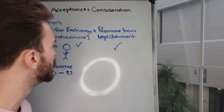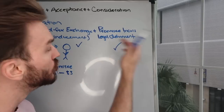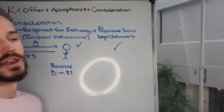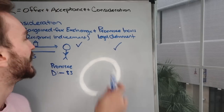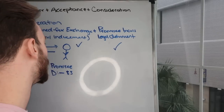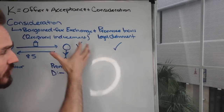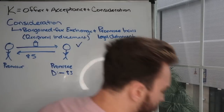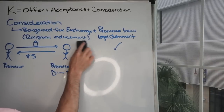By definition, we have a bargain for exchange and the promisee incurring a legal detriment. Both elements are met — in every court in the United States, that's going to be easy consideration. We have a bargain for exchange that establishes a legal detriment to the promisee. That's your most basic example.